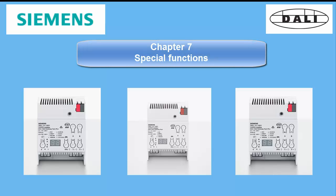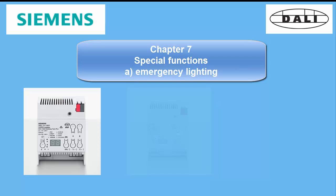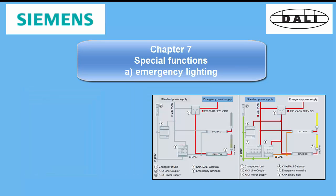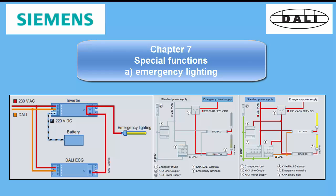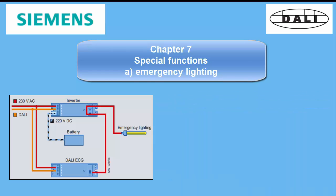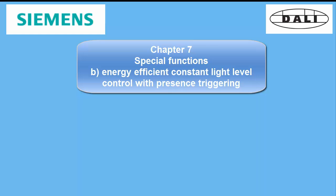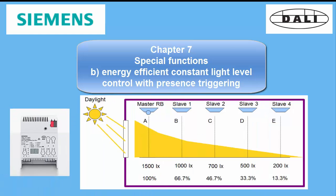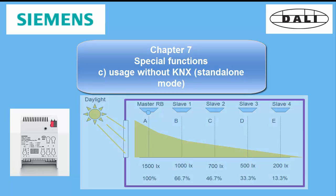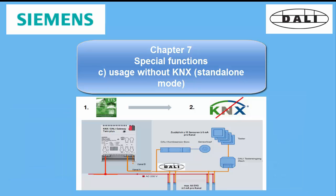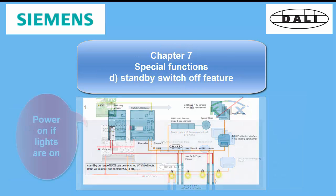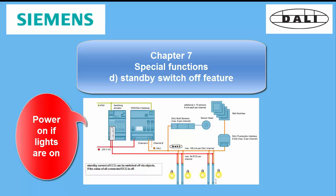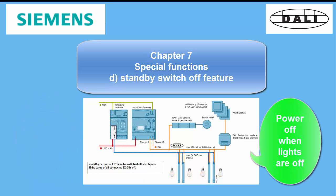Chapter 7: Special Functions. In this chapter, four options of usage are presented: a) Emergency lighting, b) Energy efficient lighting through presence triggering, c) The usage without KNX, and d) The standby switch-off feature.